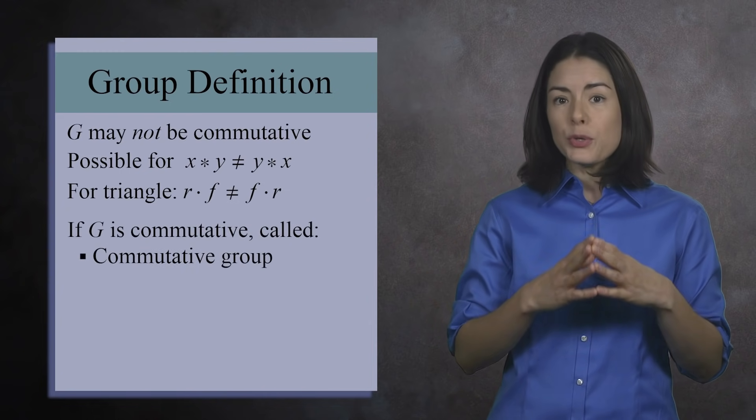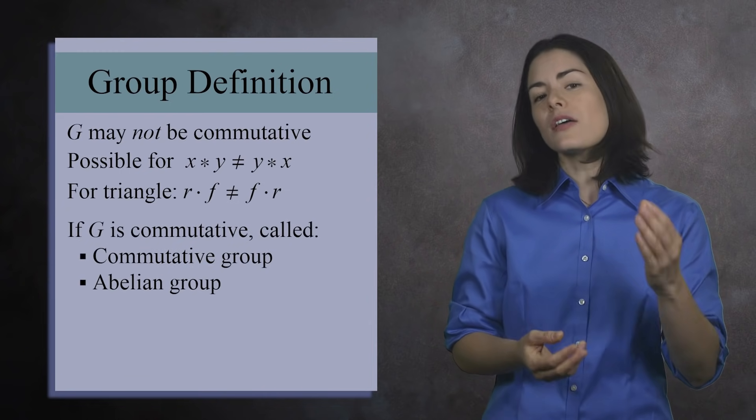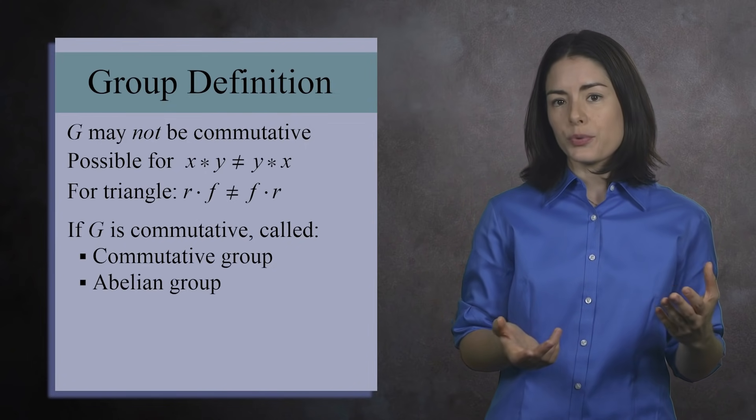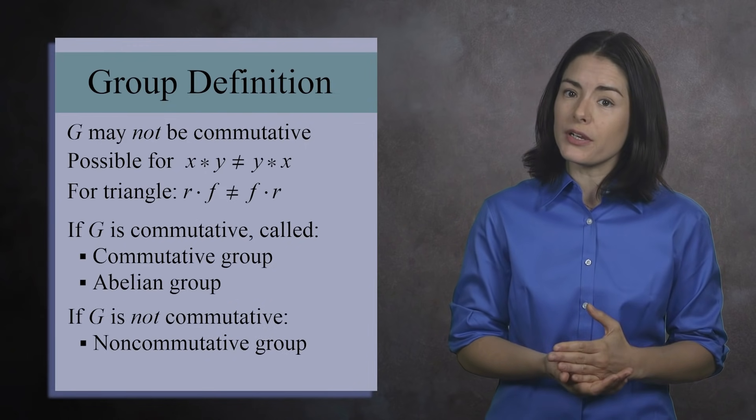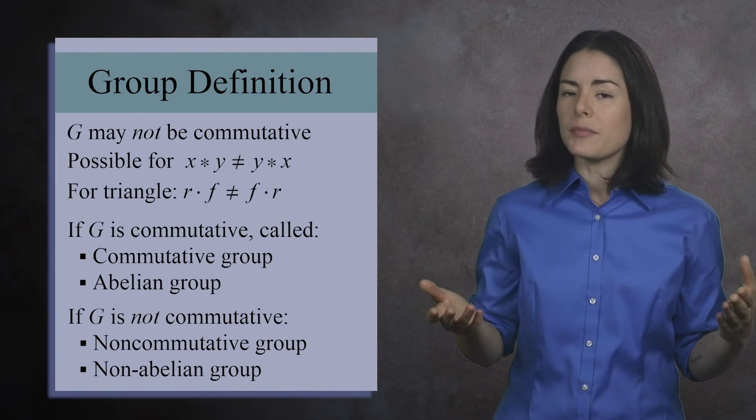If a group is commutative, we call it a commutative group. Another common name is an abelian group. If the group is not commutative, then we say it's non-commutative or non-abelian.